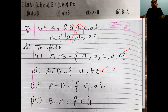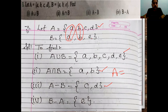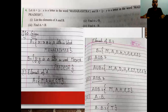A − B: elements of A not in B. Common elements are a and b; removing them leaves {c, d}. So A − B = {c, d}. B − A: elements of B not in A. After removing a and b, the remaining element is e. So B − A = {e}.